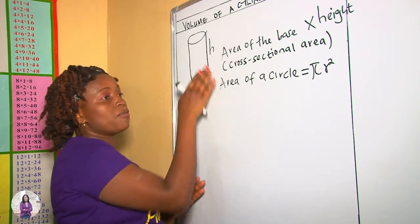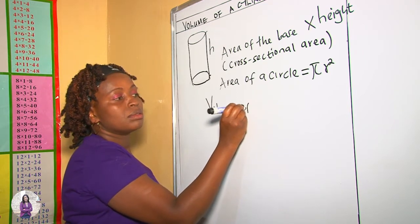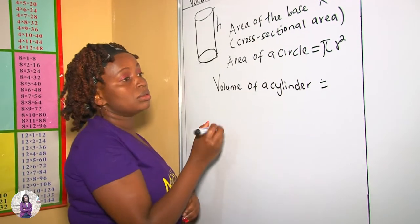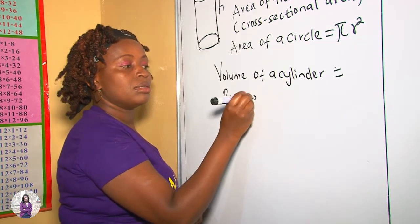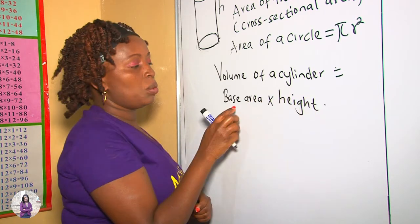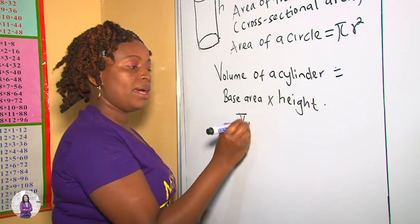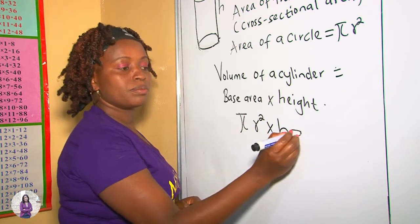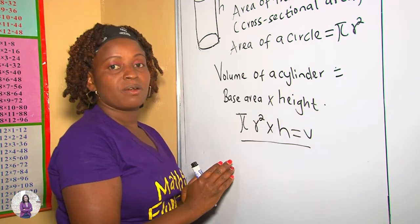Therefore, if you want to get the volume, we say volume of a cylinder equals to area of the base, or base area, multiplied by the height. And what is this base area? The base is a circle, and the area of a circle is pi r squared. Therefore, pi r squared multiplied by the height gives us the volume of that cylinder. And now, with this, we have derived the formula for getting volume of a cylinder.